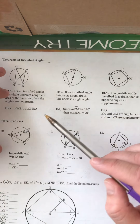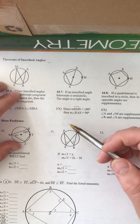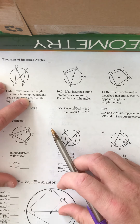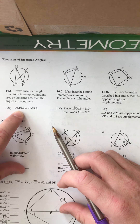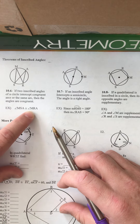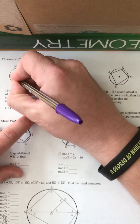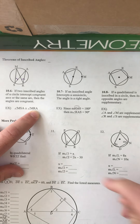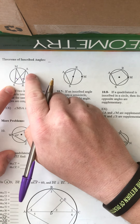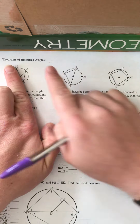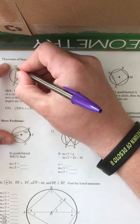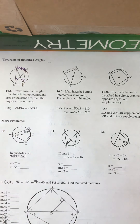Theorem 10.6: if two inscribed angles of a circle intercept congruent arcs or the same arc, then the angles are congruent. Here, the measure of angle MSA is congruent to the measure of angle MRA. Angle MSA intercepts arc MA, and angle MRA also intercepts arc MA — so both angles intercept the same arc.